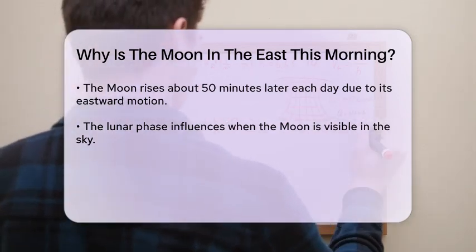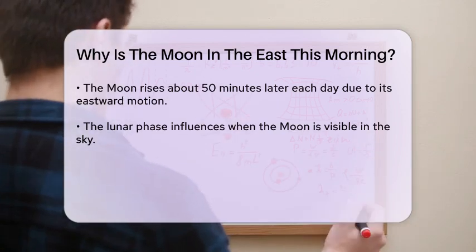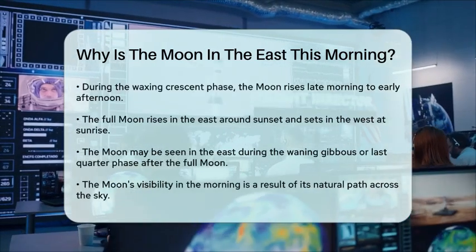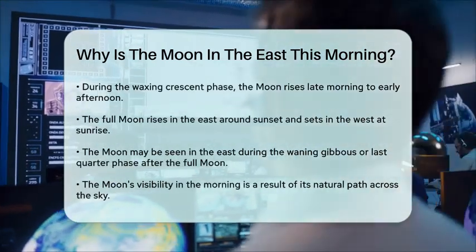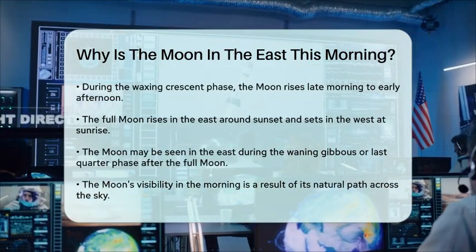When the moon is in its full phase, it rises in the east around sunset and sets in the west around sunrise. This is why you might see the moon in the east during the morning if it is in the waning gibbous or last quarter phase, as these phases occur after full moon.